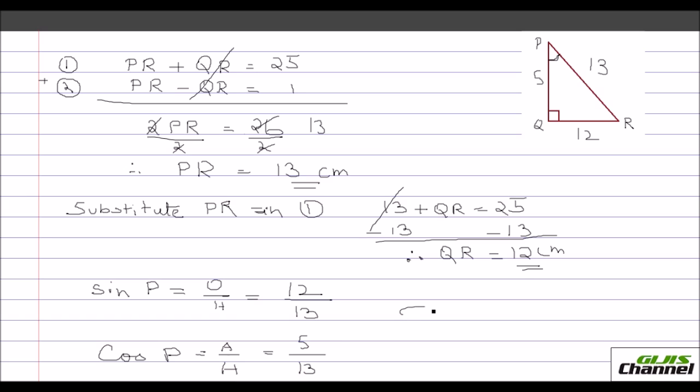And finally they had also asked you what is tan P. Tan P is opposite over adjacent. That is what is your opposite side? Opposite to P is 12 over 5. Adjacent is 5.